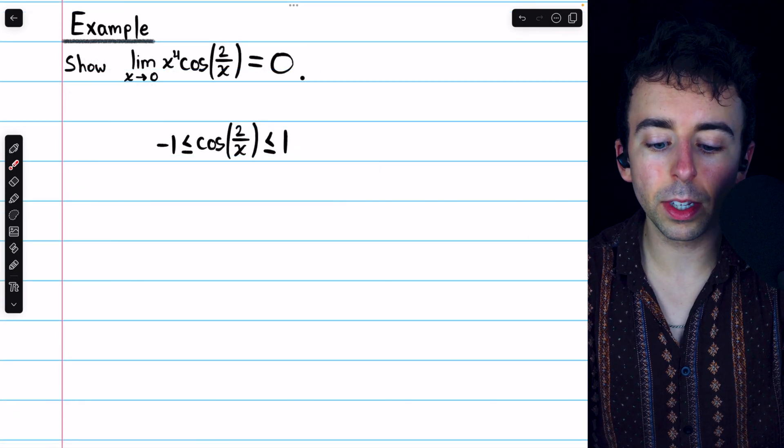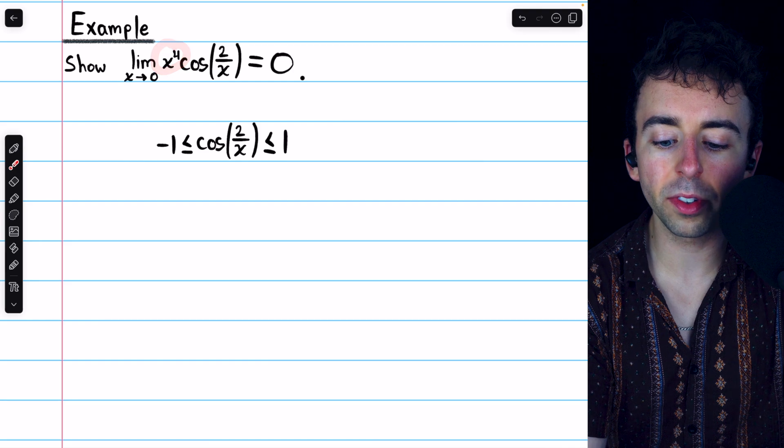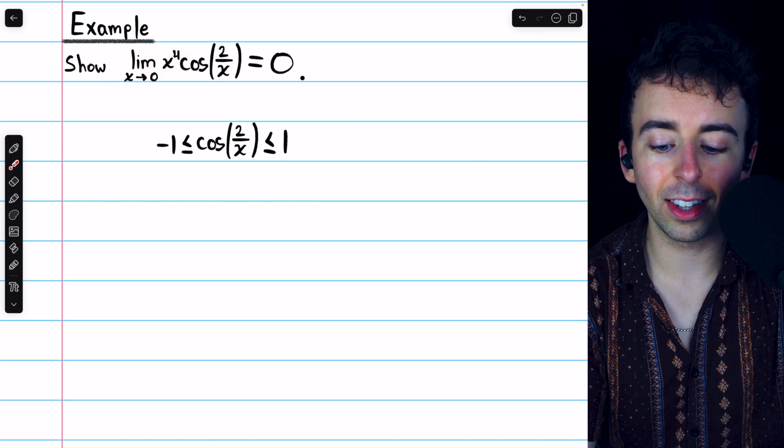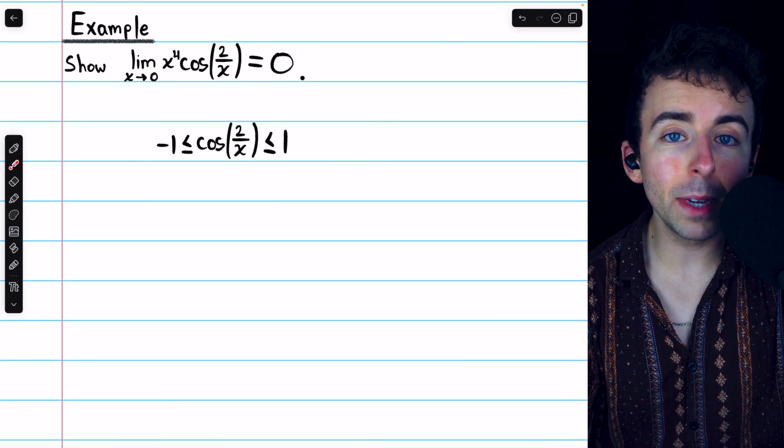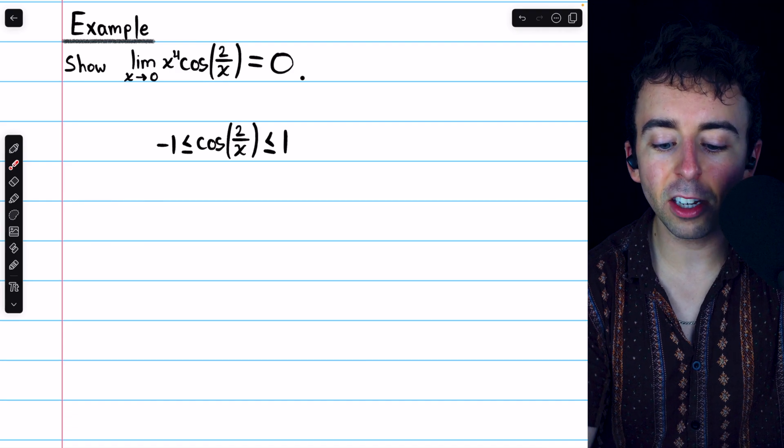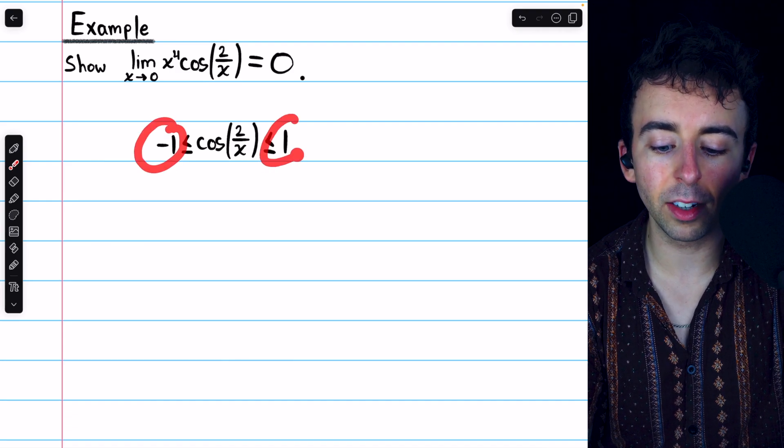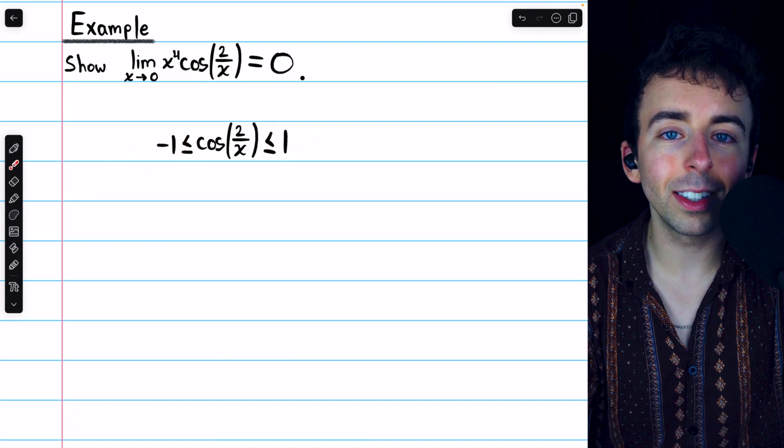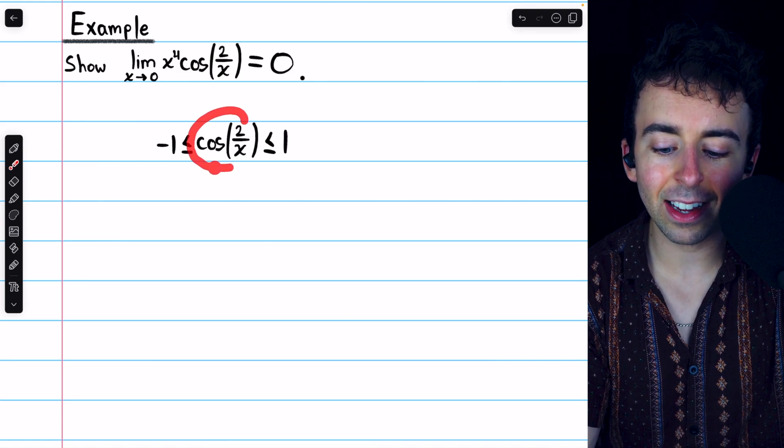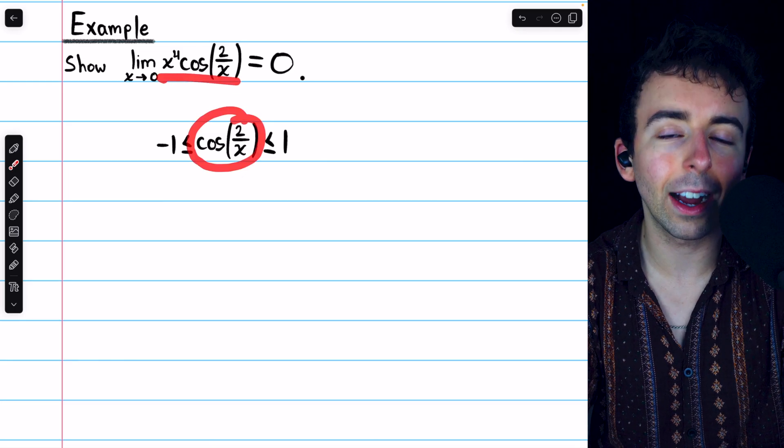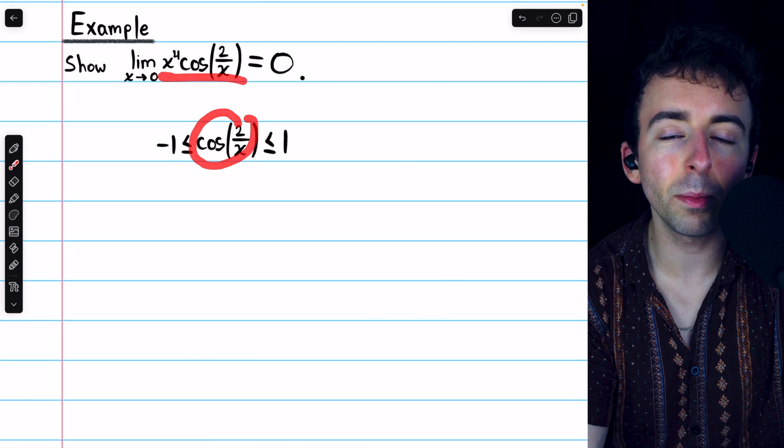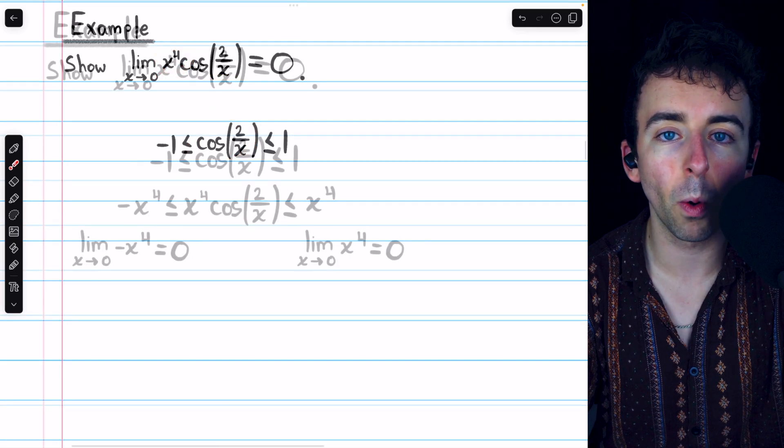For another example, consider the limit of x⁴ times cos(2/x) as x approaches 0. Again, we'll show that this limit is 0, and we can begin by noticing the trig function involved, cos(2/x), has to be between -1 and positive 1. That gets our inequality started, and as before, all we have to do is some multiplication to get this to match the function we actually want to prove something about.